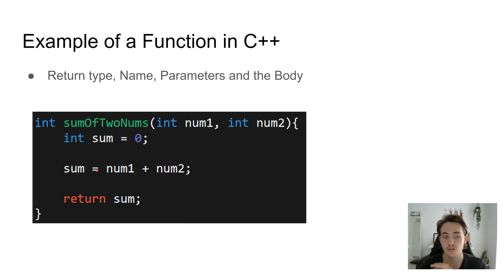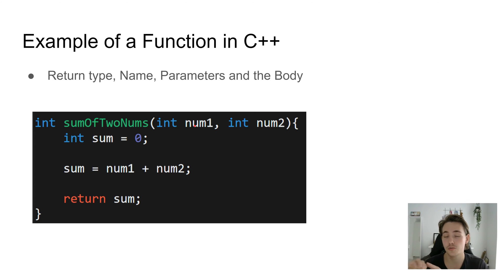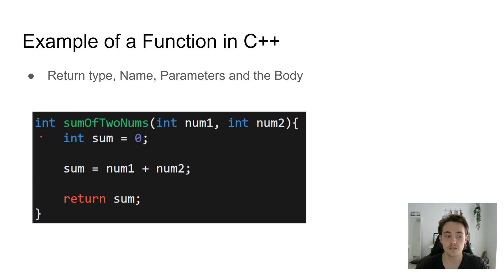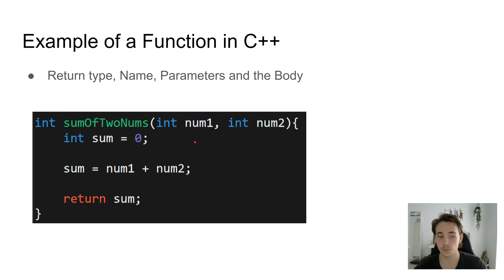When we want to call our function somewhere else in the code — for example in the main function or another function — we just write the function name with parentheses and pass the arguments. The function will return a value if a data type is specified. We can also use the void keyword instead of a return type, which means the function returns nothing — useful when we just want to update variables or print something without returning a value.